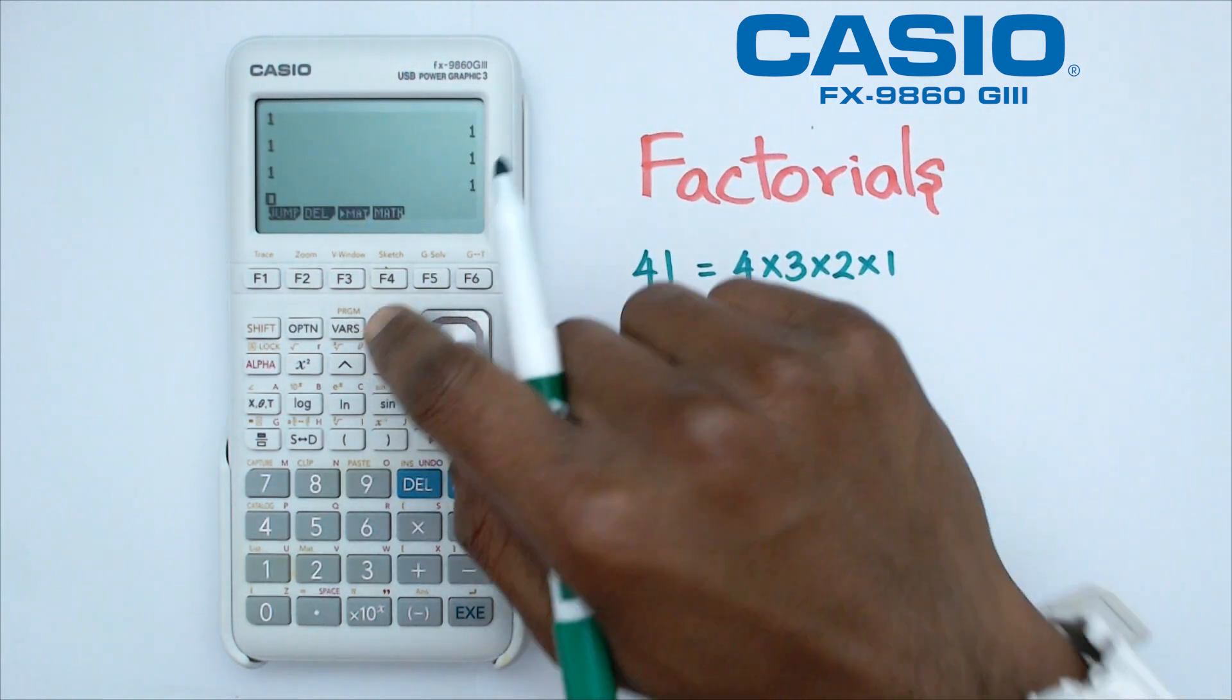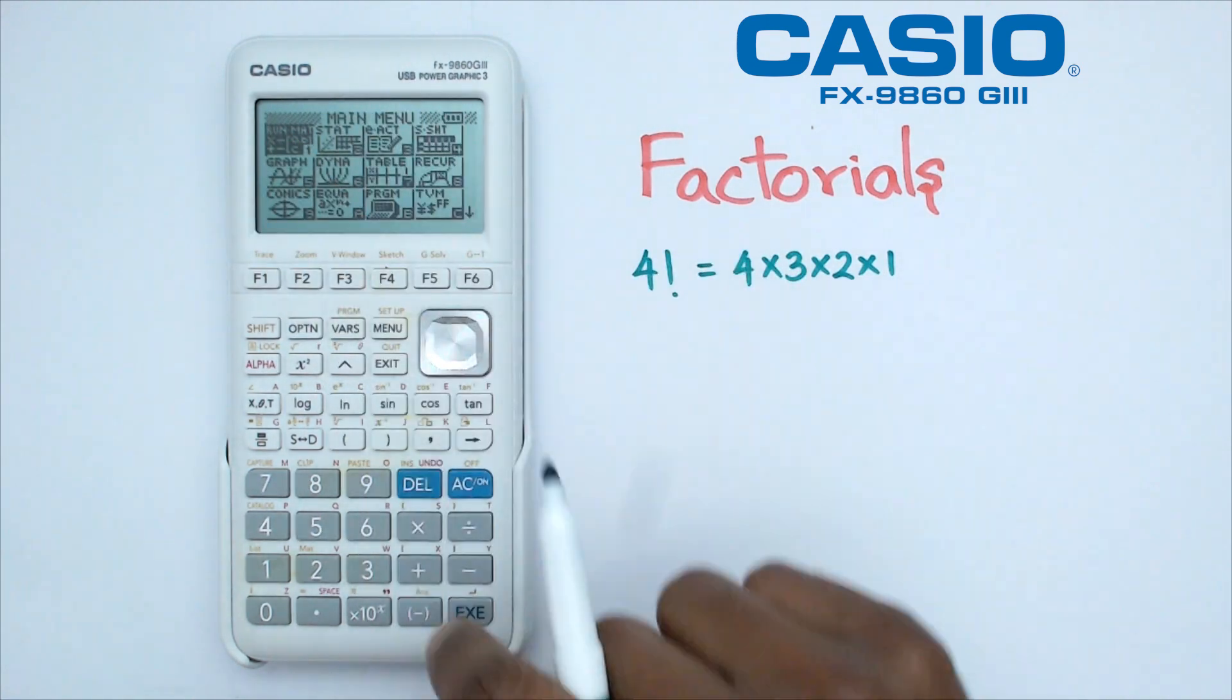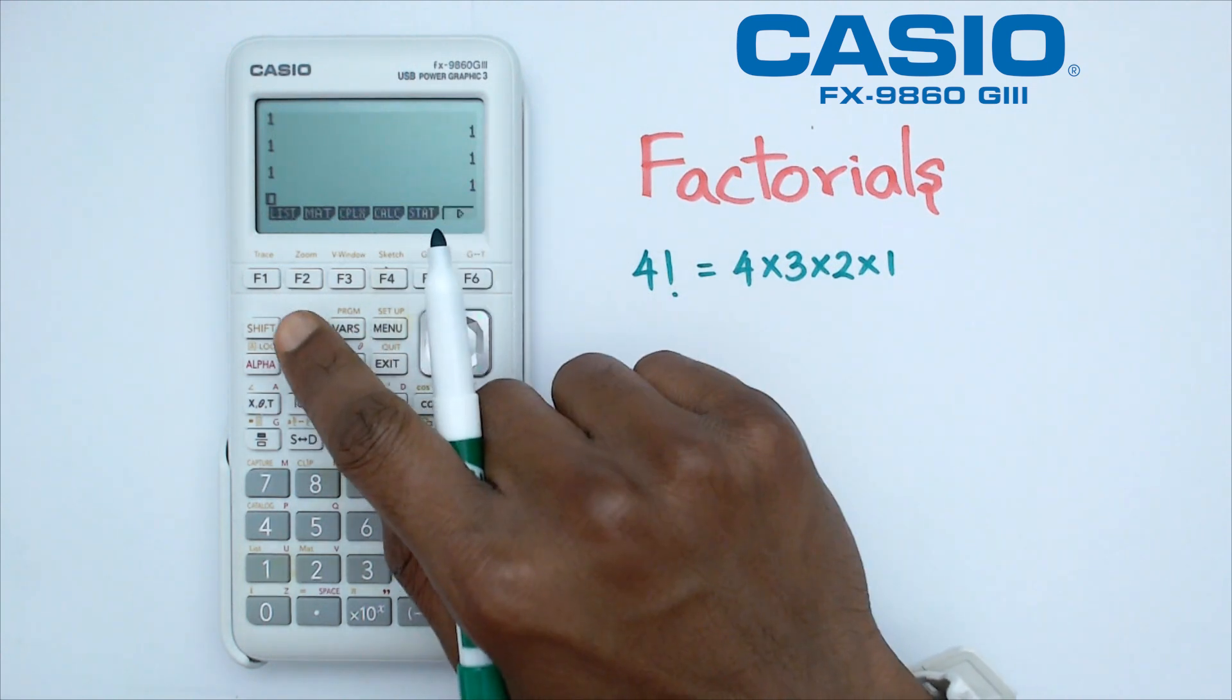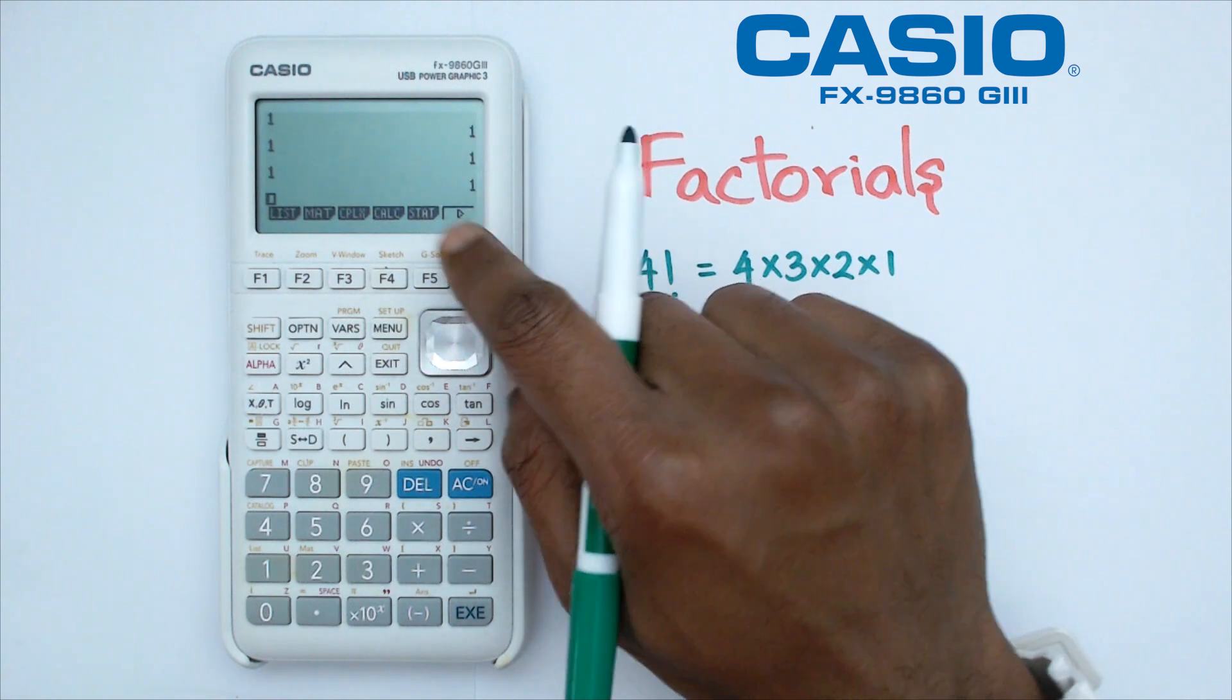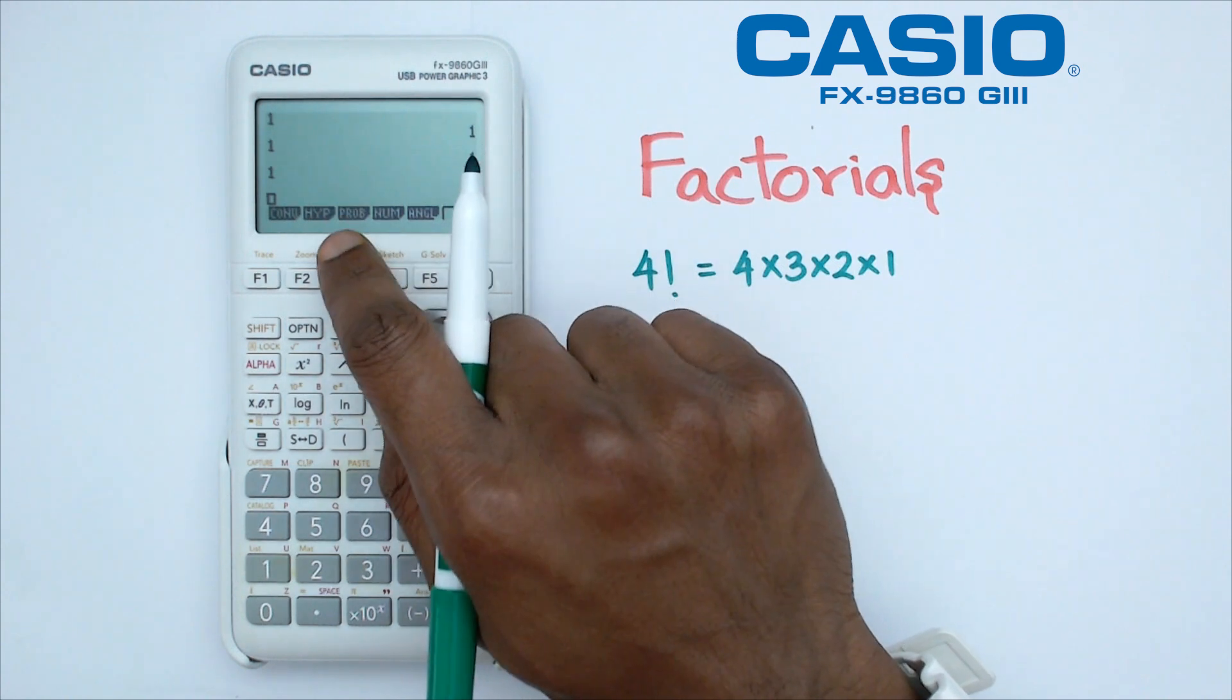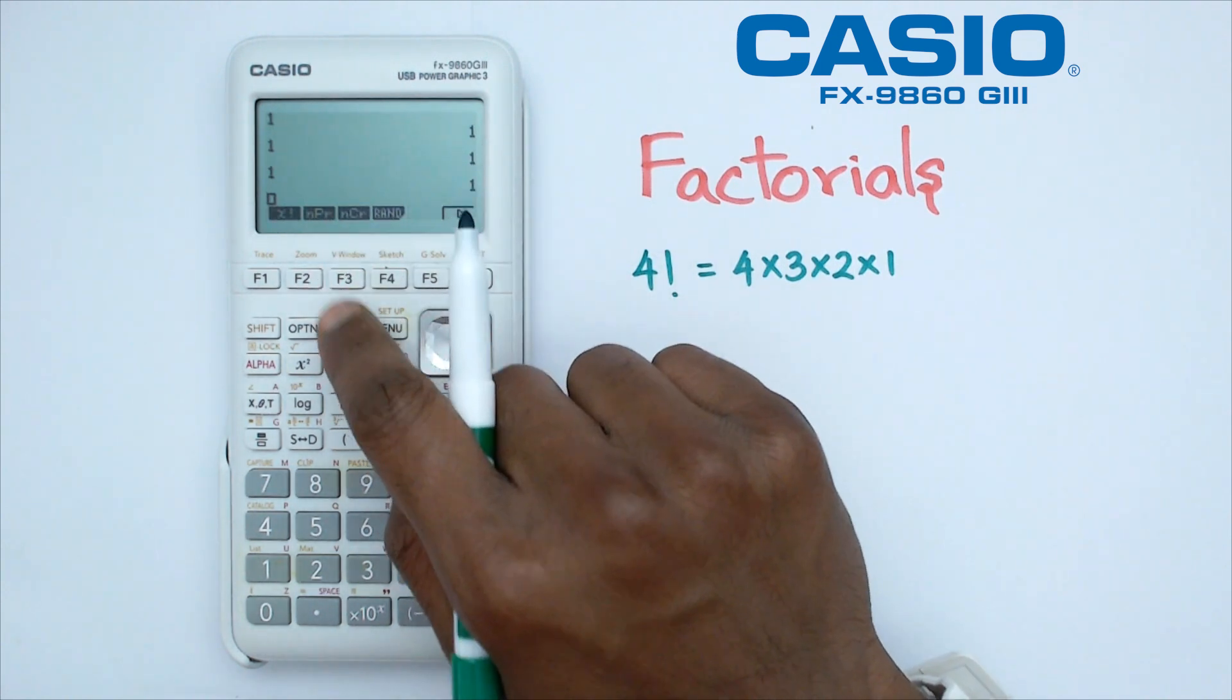We're going to switch on the calculator and what we're going to do is go into menu and we're going to go into the run menu. Go in there and at this point, what we'd like to do is click on the option button, and then we're going to click on F6, which is the next page of the menus here. And you want to keep pressing F6 until you get to the one that says prob. So probability, F3, we're going to click on that.